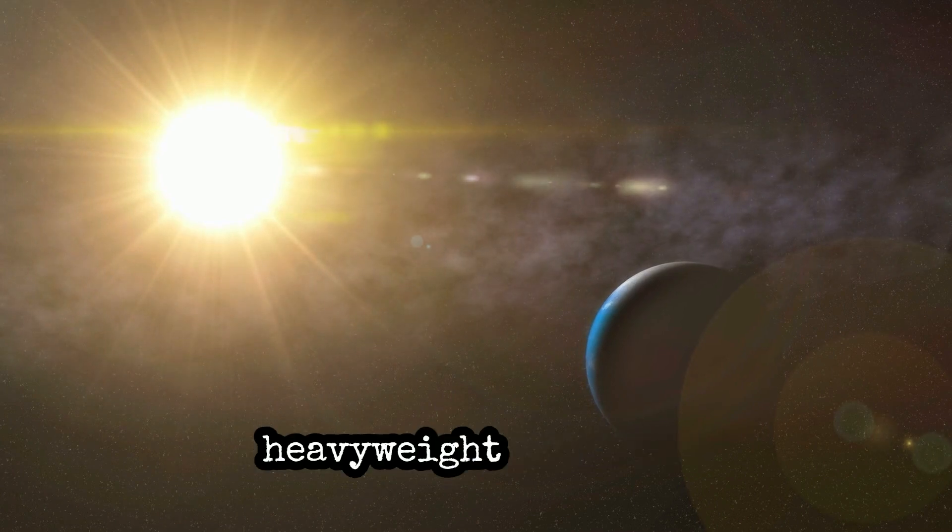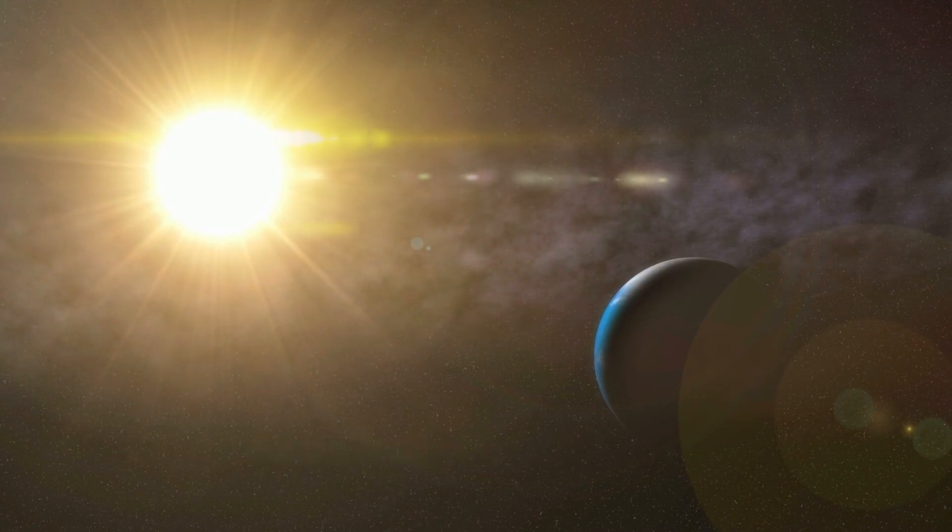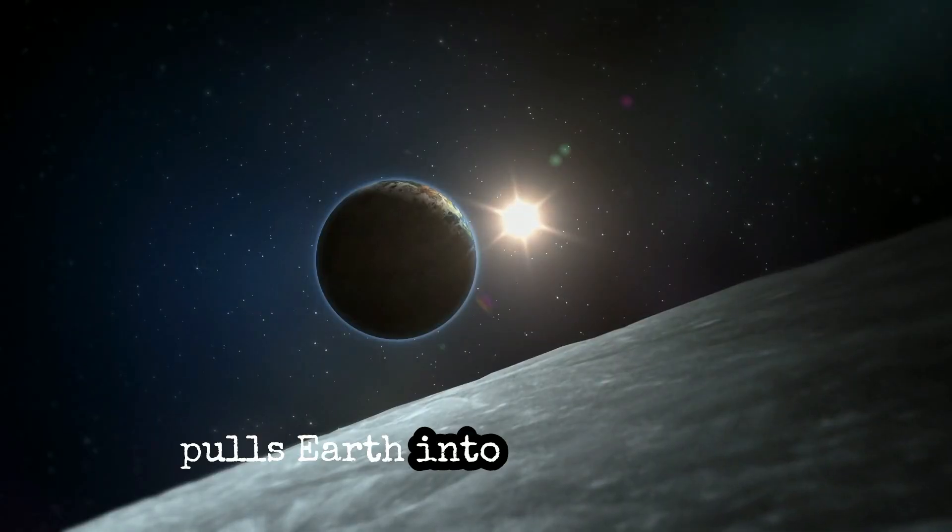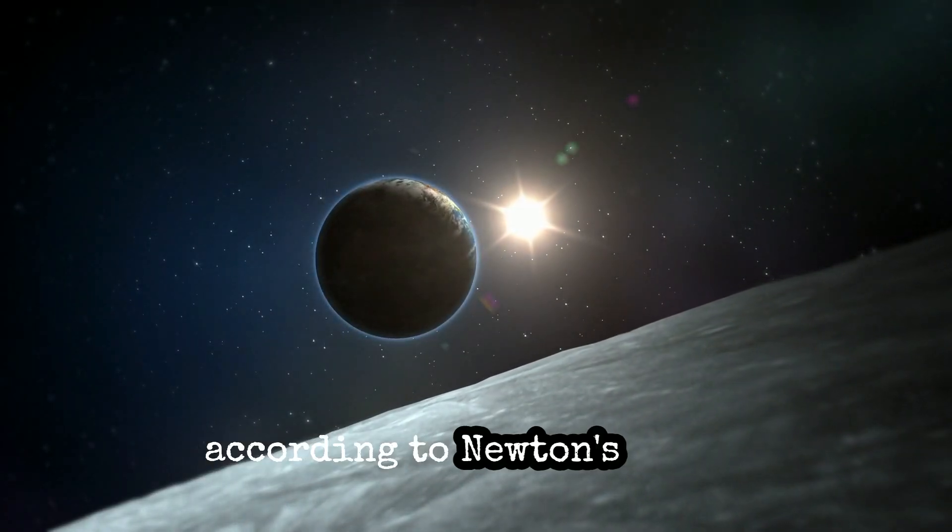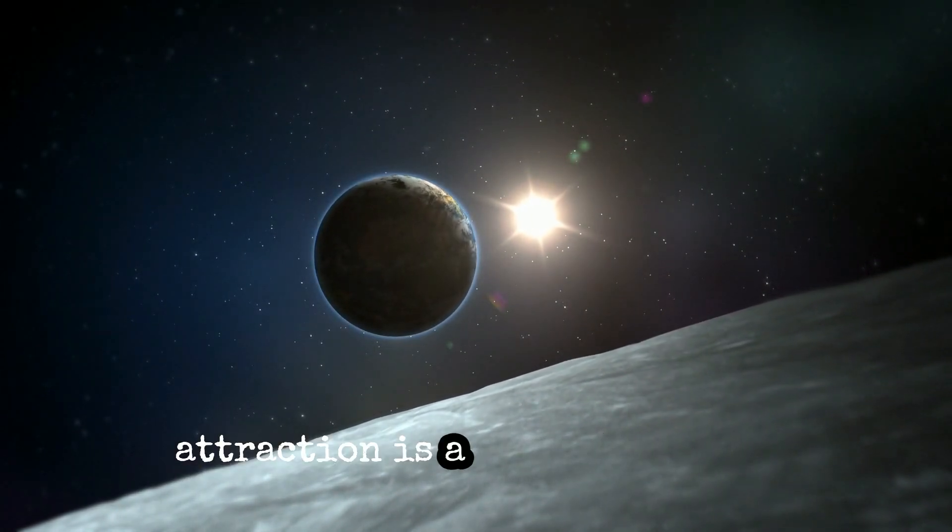Although the Sun is the heavyweight champion of our solar system, it doesn't always claim the barycenter as its throne. The immense mass of the Sun pulls Earth into its orbit, but according to Newton's law of universal gravitation, this attraction is a two-way street.